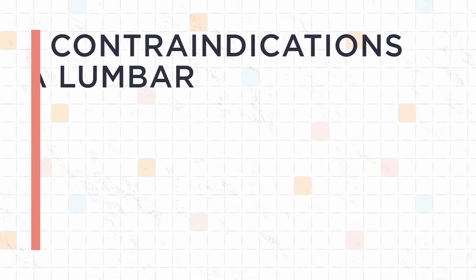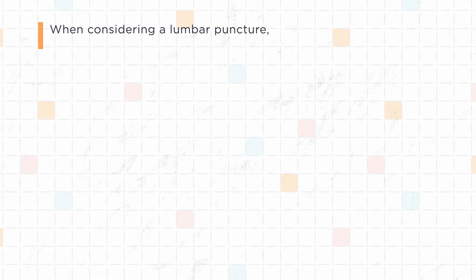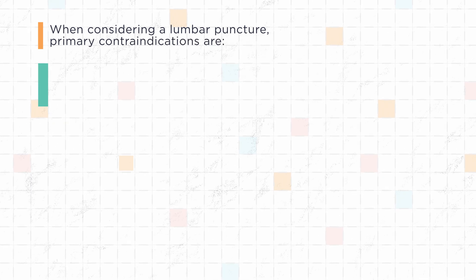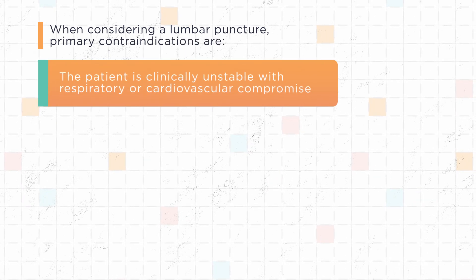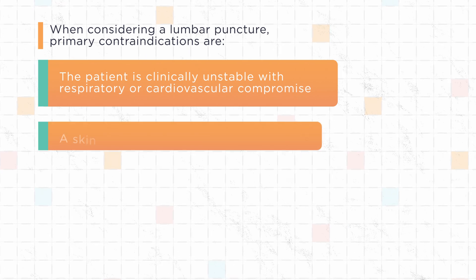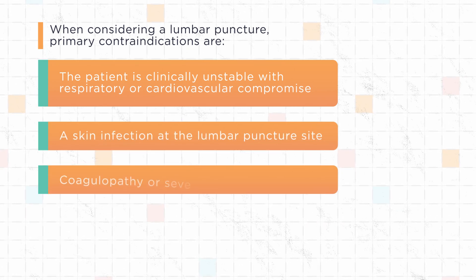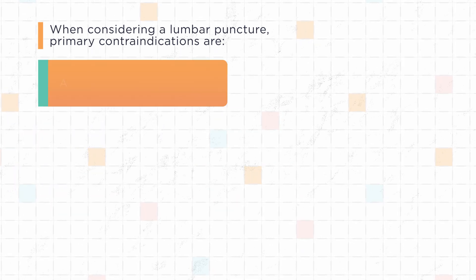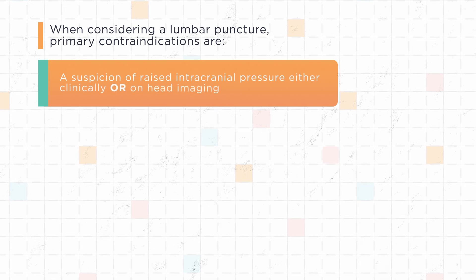Let's review the contraindications and complications of a lumbar puncture. Primary contraindications are: the patient is clinically unstable with respiratory or cardiovascular compromise, a skin infection at the lumbar puncture site, coagulopathy or severe thrombocytopenia, and a suspicion of raised intracranial pressure either clinically or on head imaging.